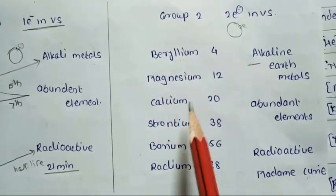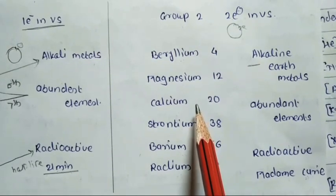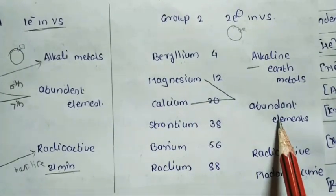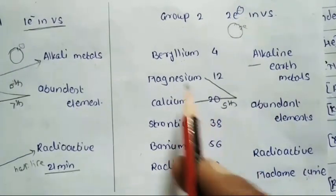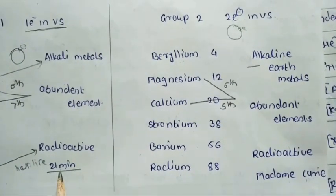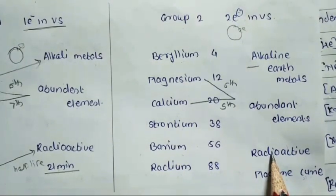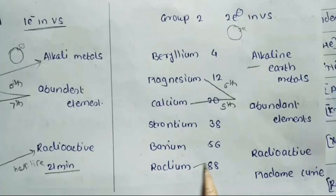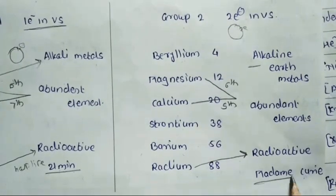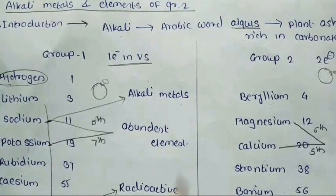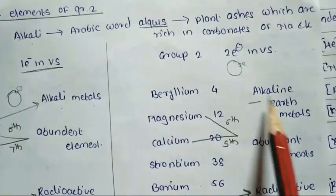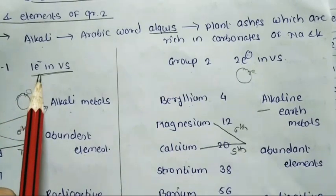Here also two most important elements are present — magnesium and calcium — which are the most abundant elements in the universe. Calcium is the fifth and magnesium is the sixth most abundant element. Similarly to group 1, group 2 also has a radioactive element — radium — which was discovered by Madame Curie. Group 1 is called alkali metals and group 2 is called alkaline earth metals.